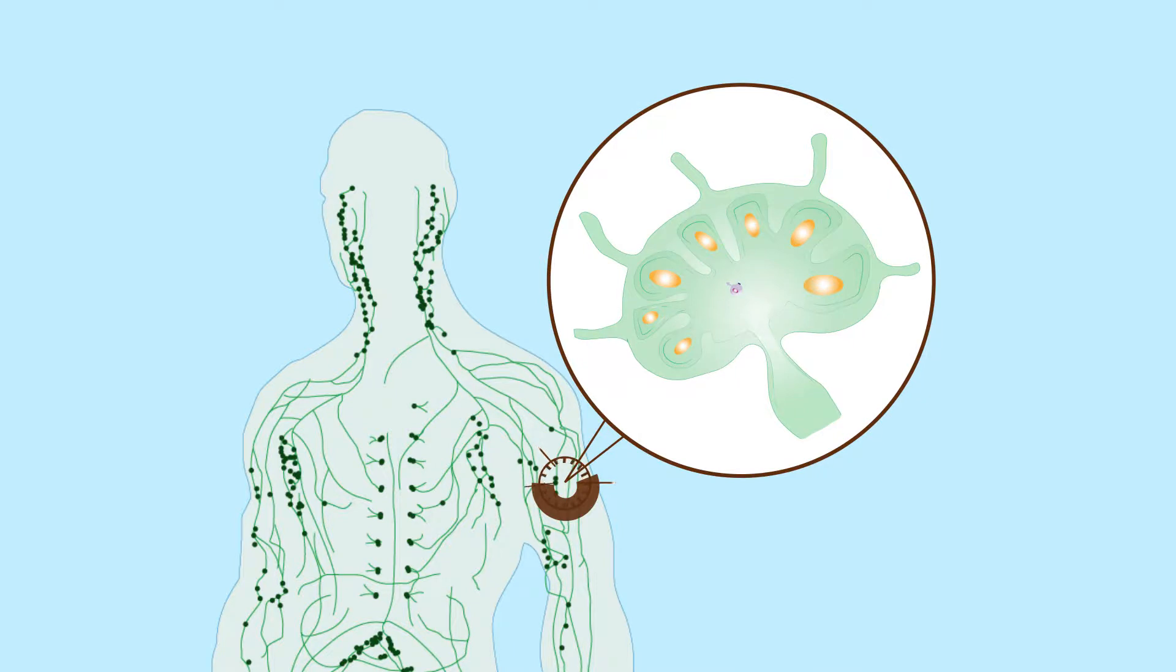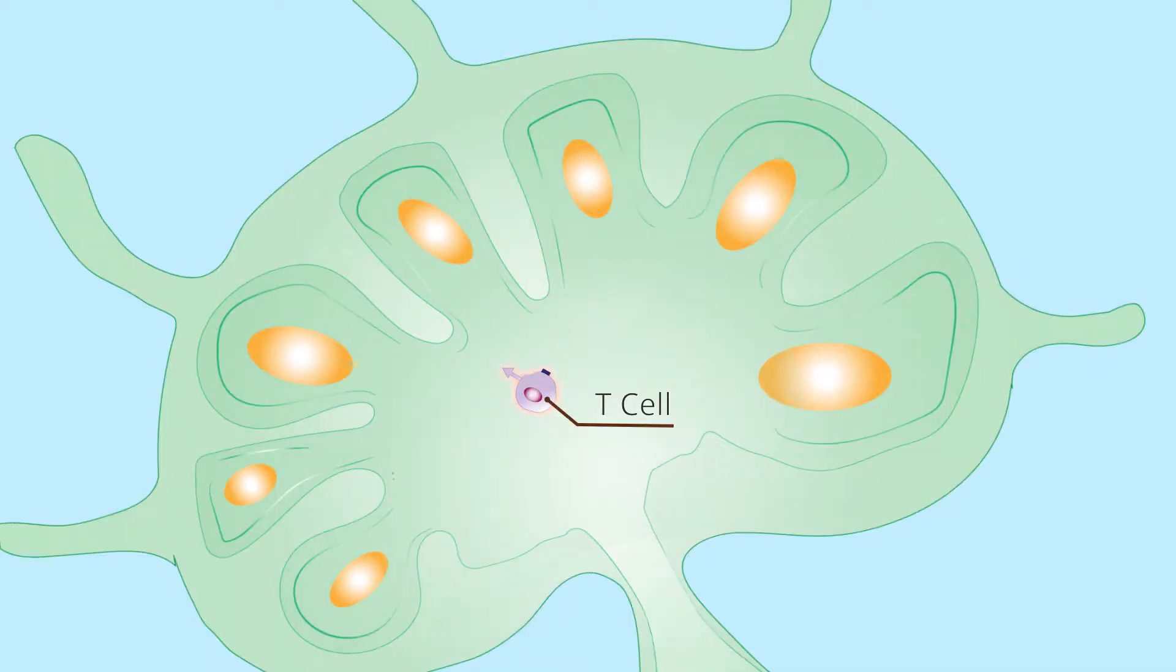In the lymph node, T cells scan peptide MHC complexes on dendritic cells. If a T cell recognizes its specific antigen, it is temporarily trapped inside the lymph node.